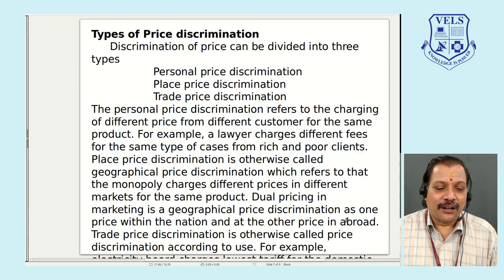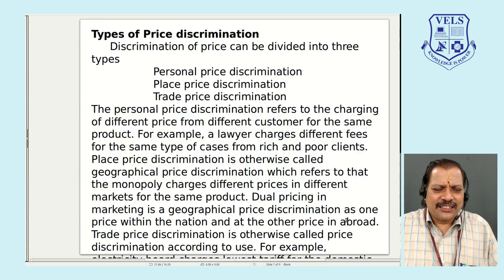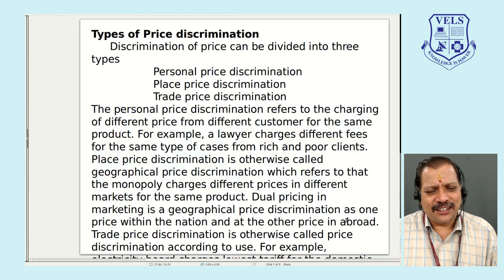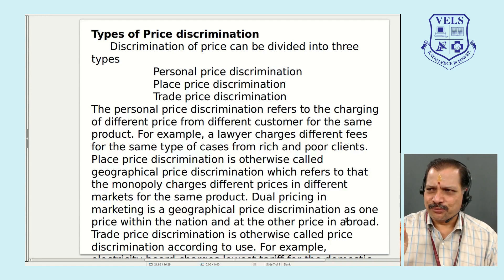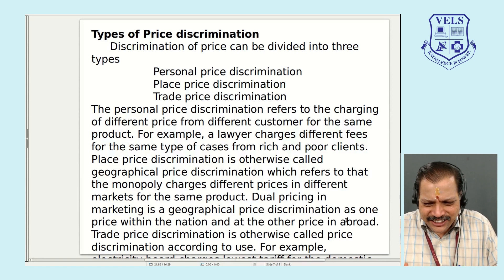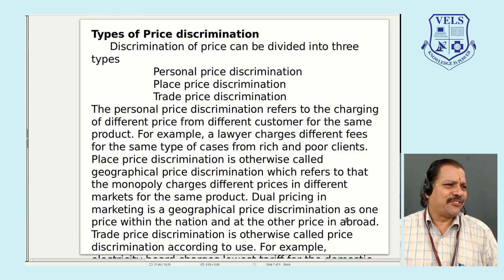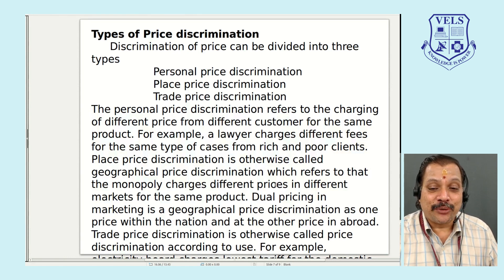The second type is place price discrimination, also called geographical price discrimination. The monopoly charges a different price for the same product in different markets — one price in one area, another price in a different area — based on change in place. This may also be called dual pricing. For example, a product sold domestically has one price, while the export quality has a different price — domestic price versus international price.